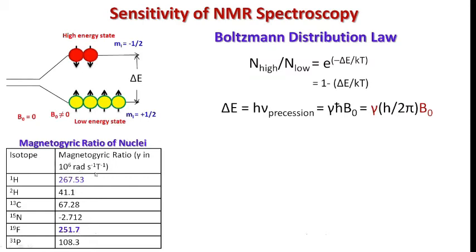And if we see, this fluorine-19 is having 251.7 × 10⁶ radians per second per tesla. That is the reason why proton and fluorine nuclei are more sensitive towards the NMR spectroscopy as compared to the other nuclei. In comparison to this, carbon-13 which is having low value for this gyromagnetic ratio.